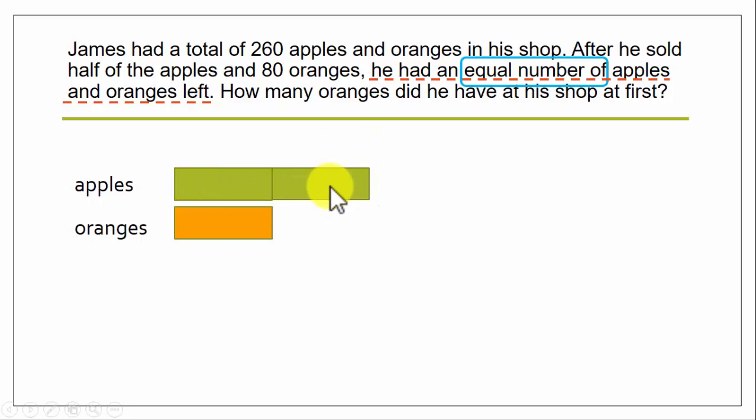So he would have had this one whole, right? Half plus another half which he had sold. And for oranges, this is what he has after he sold 80 oranges. So before that he would have had another 80 oranges. So this whole thing was what he had at first, and the total of this was 260.